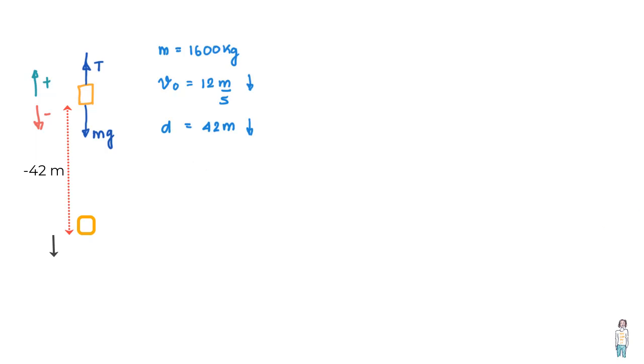We can also write here that the final velocity is 0 meters per second because it comes to a stop over a distance of 42 meters. So the question being asked is what is the value of T as this happens, that is as the elevator moves around and comes to a stop over a distance of 42 meters.